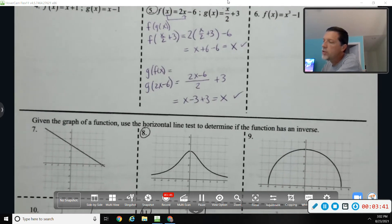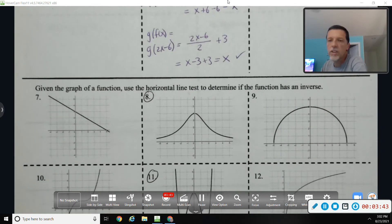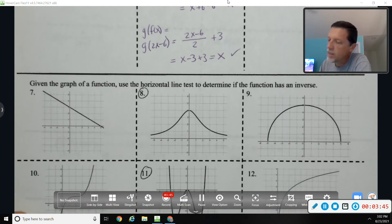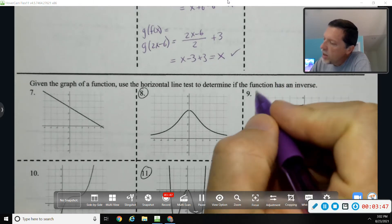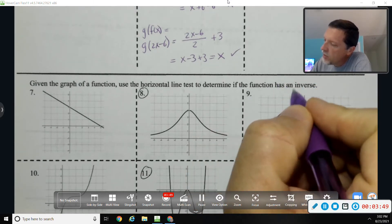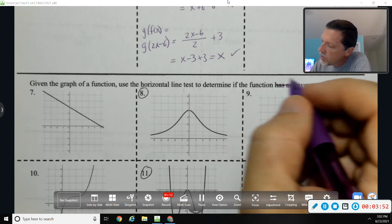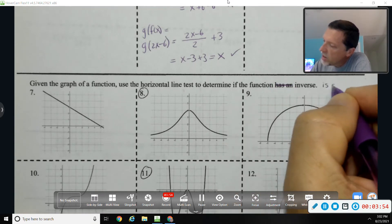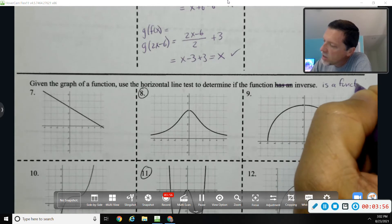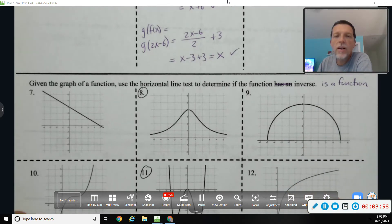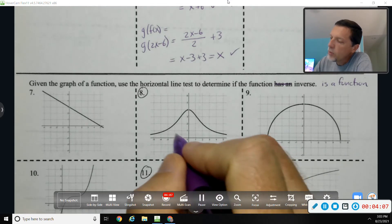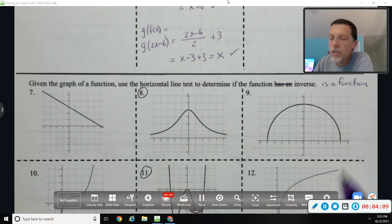Next section: using the horizontal line test to determine if the function's inverse is a function. Okay, they all have inverses, meaning we can all flip that graph across y equals x and get something new. But the question we really want to know is, once we take the inverse, is the inverse also a function? That's what the horizontal line test tells us.